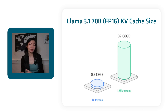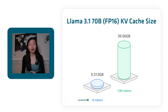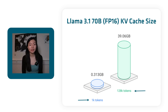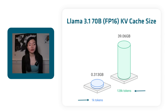To give you a sense of solid numbers for the Llama 3.1 70 billion parameter model in FP16: the KV cache size for 1,000 tokens is just about a third of a gig, whereas when you leverage the entire context window of 128,000 tokens, it's 39 gigs of memory. So it definitely scales as you increase the number of tokens you put into the context.